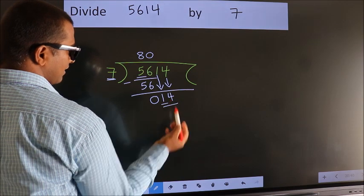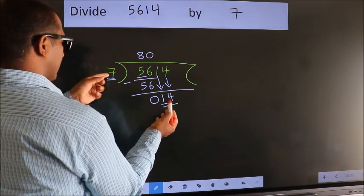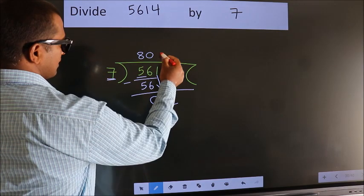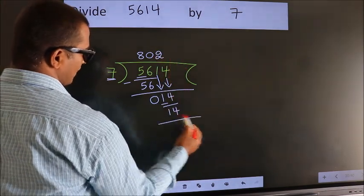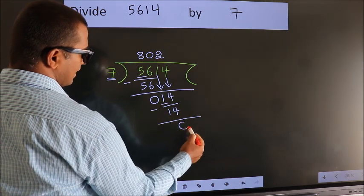So, 14. When do we get 14? In the 7 table. 7 times 2 is 14. Now we subtract. We get 0.